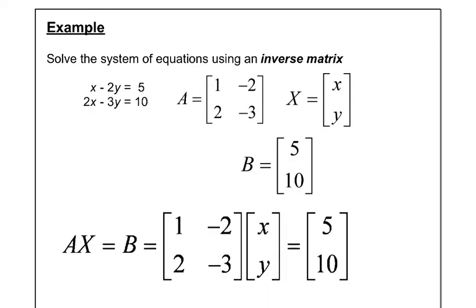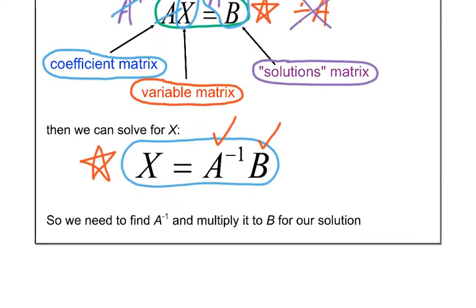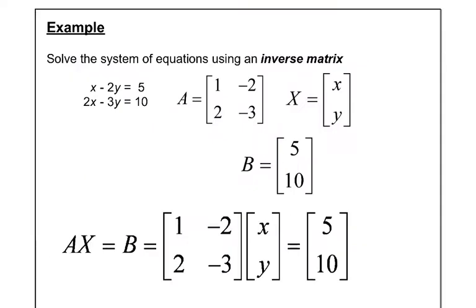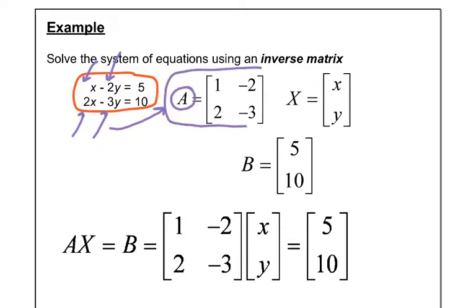If I give you a system of equations here and just start with a very simple example. Do you see where all the coefficients are in front of the x? There's, well, there's nothing, but it means there's a 1. And from the y is a negative 2, over here is a 2 and over here is a negative 3. So if I take those four numbers, that's what's going to constitute my A matrix. You see how the A matrix is made up of all those coefficients? So this is our coefficient matrix.